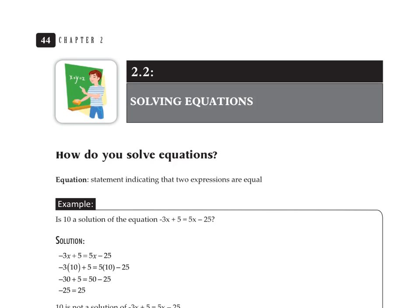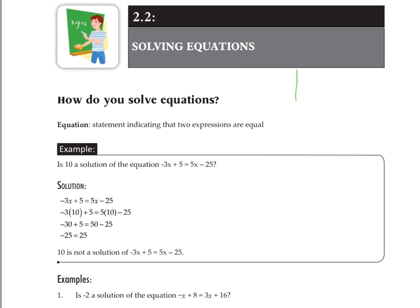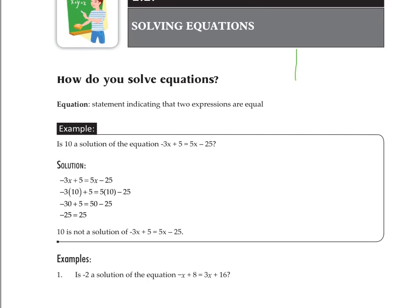Here we are working through Al Groesch's Developmental Math 2 workbook. We're in Section 2.2, Solving Equations. So how do you solve an equation? First, a review of what an equation is: a statement indicating that two expressions are equal. An equation always has an equal sign. You cannot solve an expression because there is no equal sign — you can only solve equations.